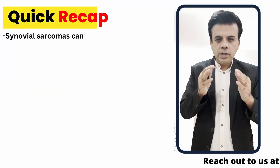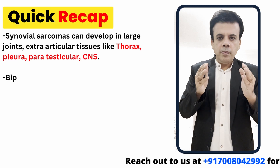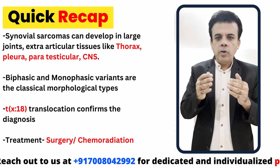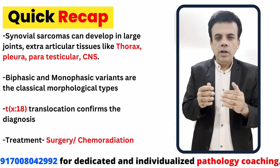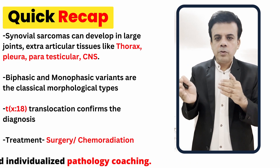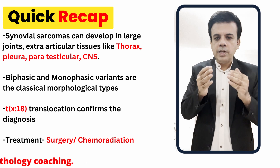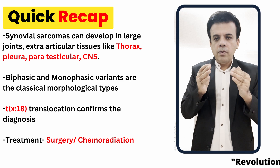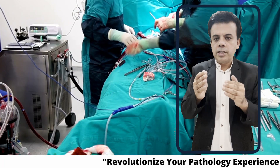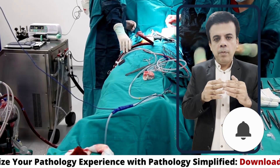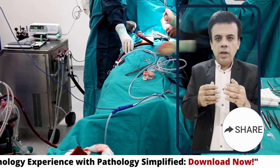In summary, synovial sarcoma is seen in large joints of the upper and lower extremity and also in internal locations such as intra-abdominal, intrathoracic, and parapharyngeal sites. It is identified by biphasic and monophasic variants on microscopy. The t(X;18) translocation is the characteristic cytogenetic abnormality confirming the diagnosis. Treatment is primarily surgical, with chemo-radiation considered in difficult or advanced cases.